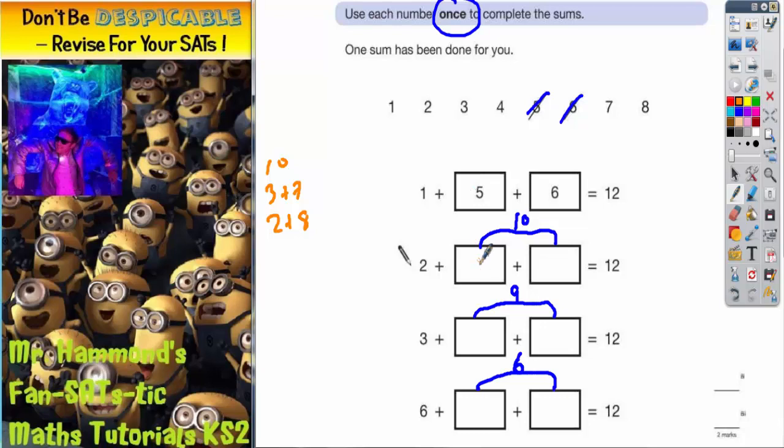So let's just try something. Let's just try putting a 3 and a 7 in there. So that would mean 3 and 7 have gone. Now I've got to make 9. So how can I make 9 from the numbers that are left? So I've got 1, 2, 4, and 8.